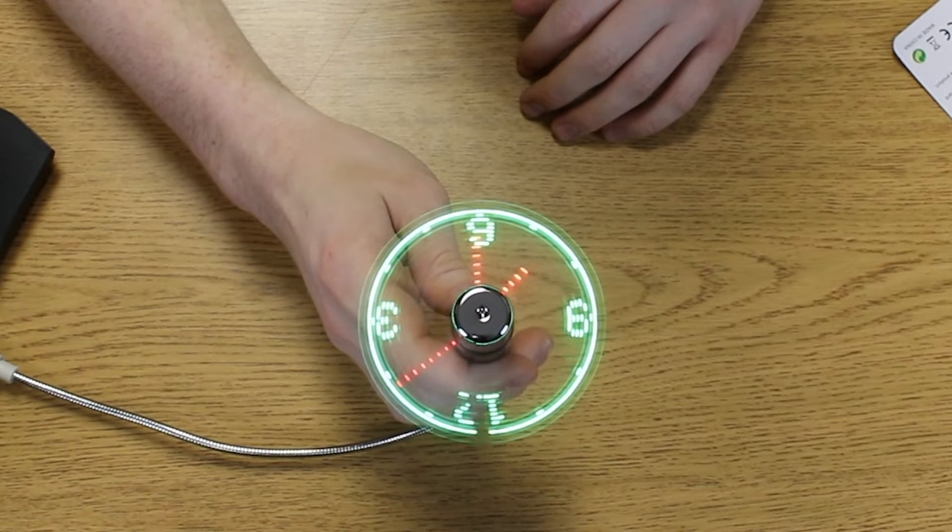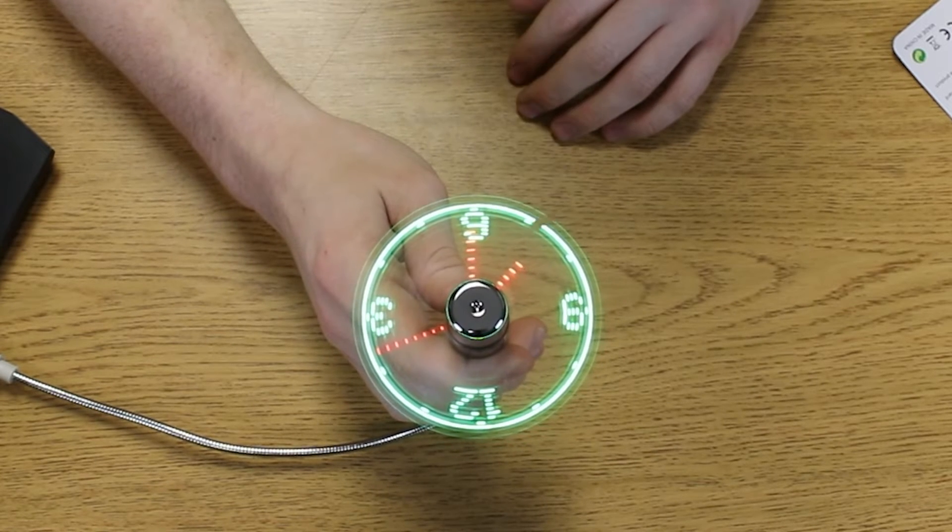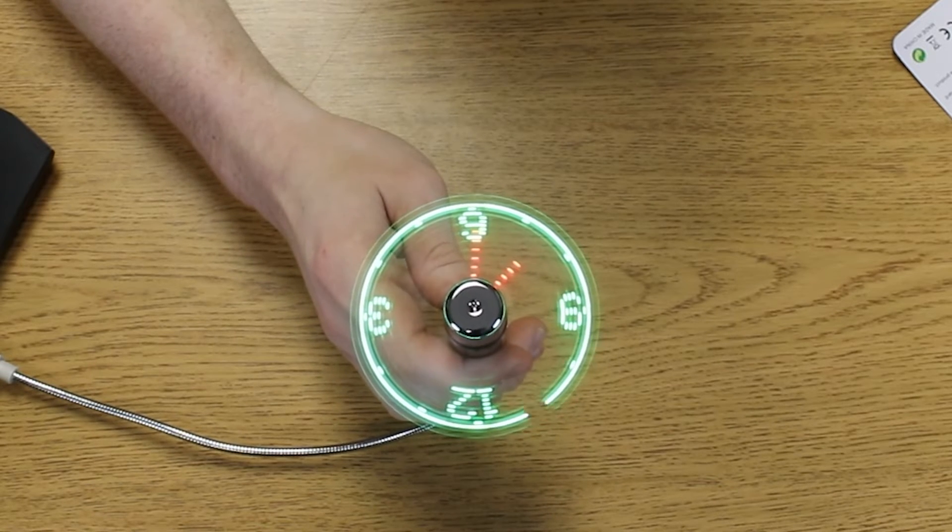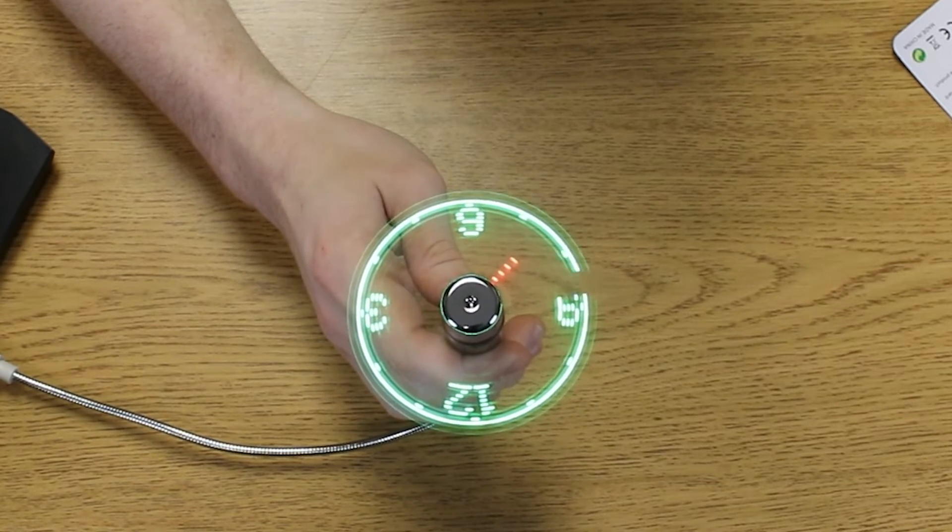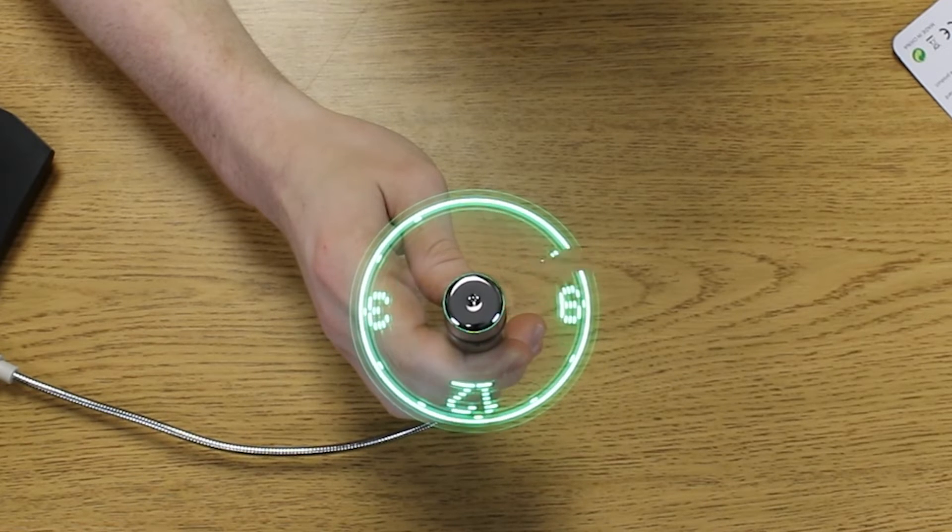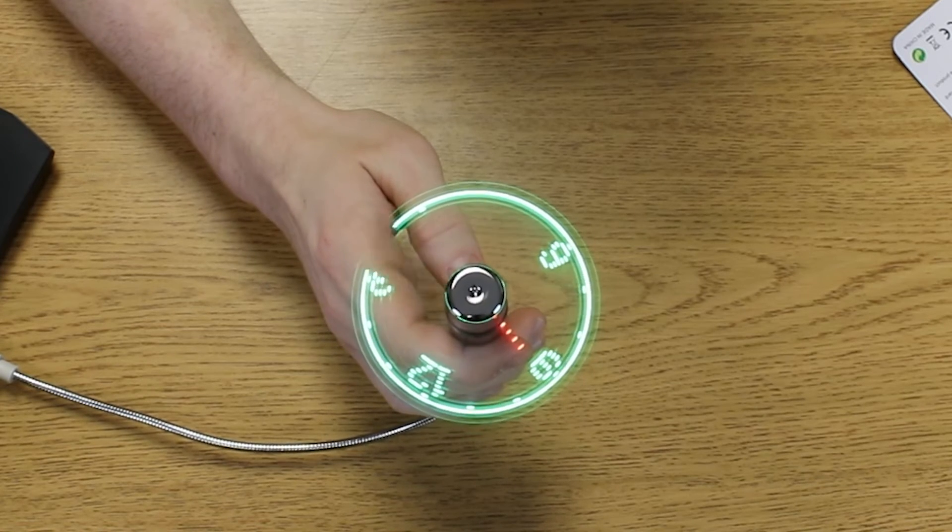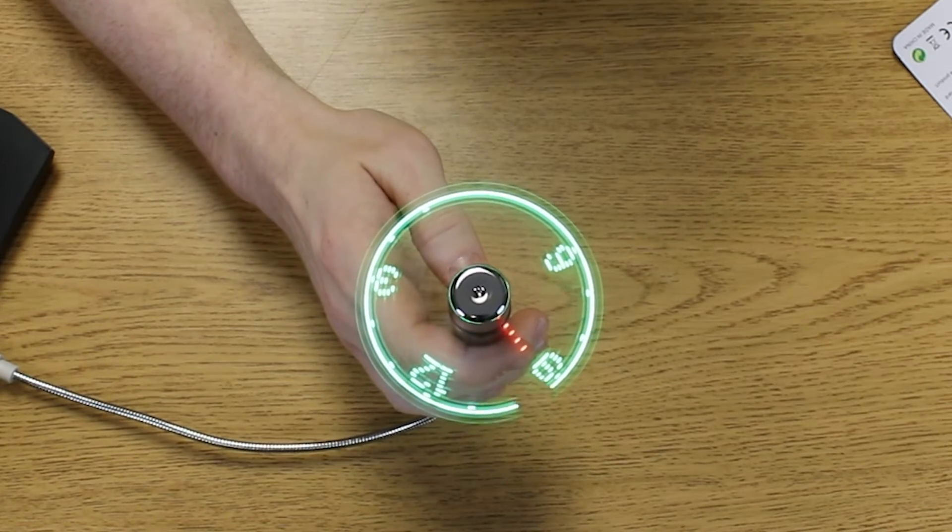To set it to the correct time, just hold down the power button until the minute hand starts blinking. And there it is. Now you can either hold it down and it will start spinning for you, or alternatively you can click it to keep it going.